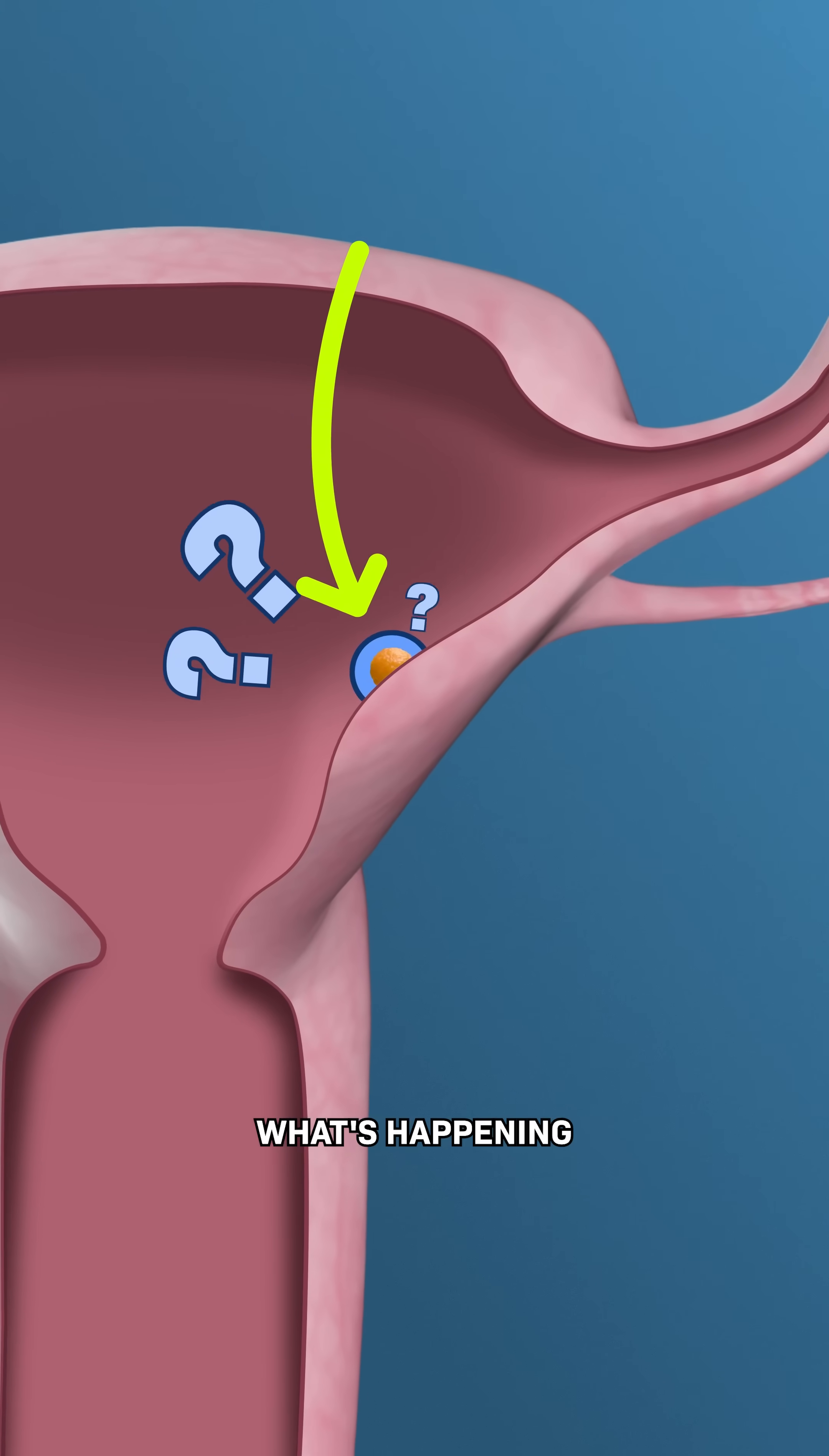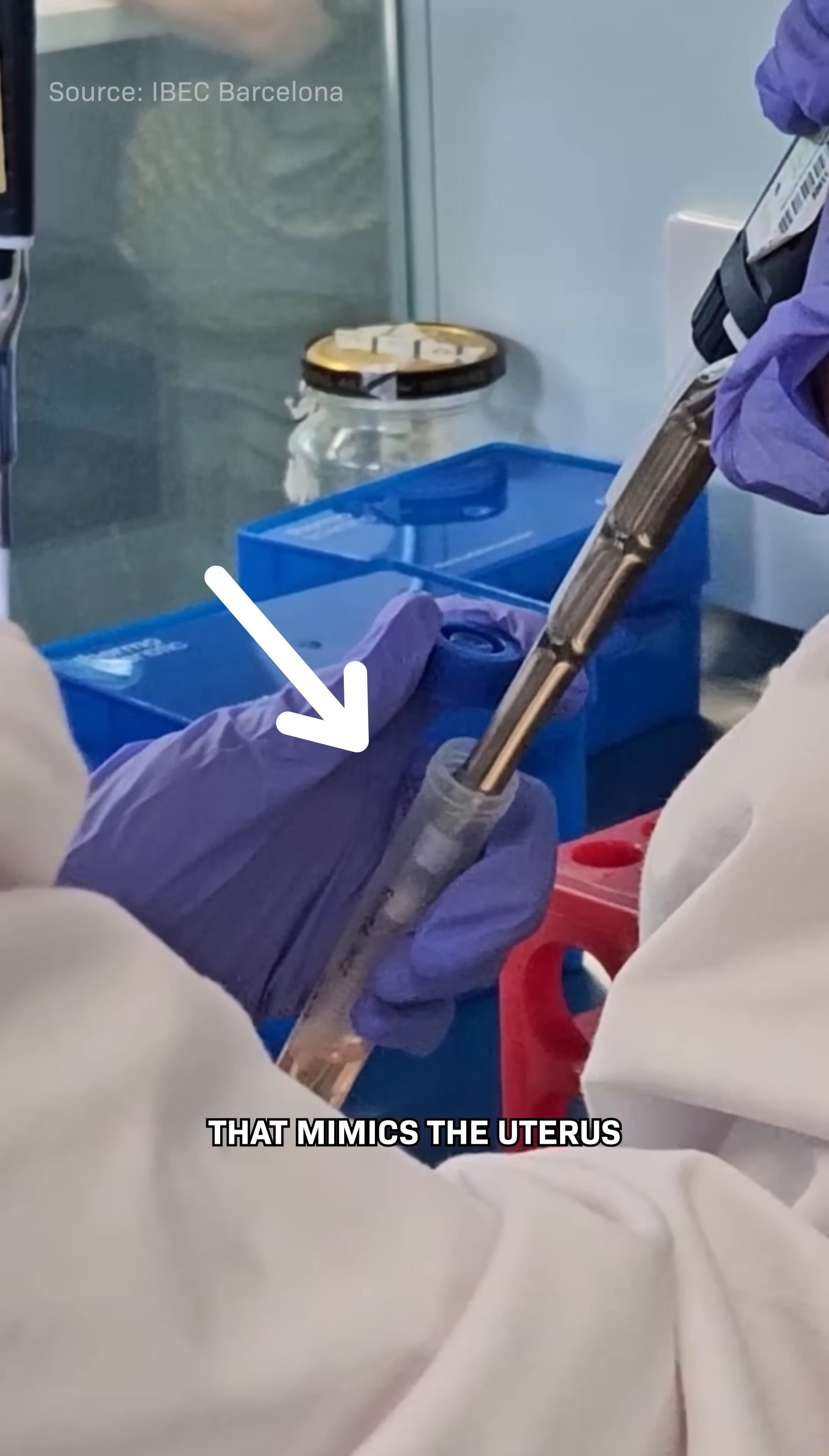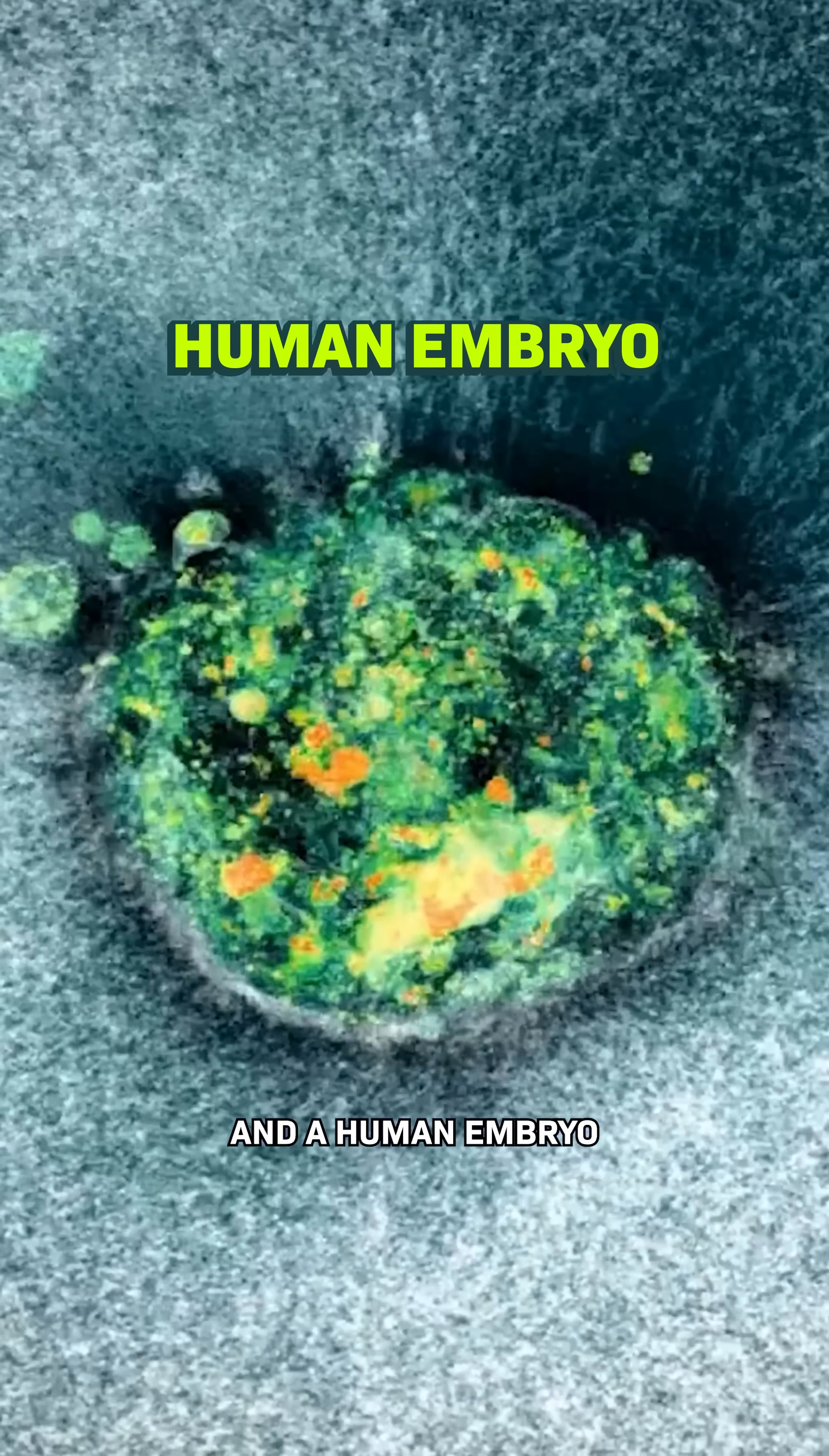because it's hard to study what's happening inside a pregnant person. To get a better look, scientists created a gel that mimics the uterus and set up a 3D microscope to capture footage, and watched how a mouse embryo and a human embryo latched on.